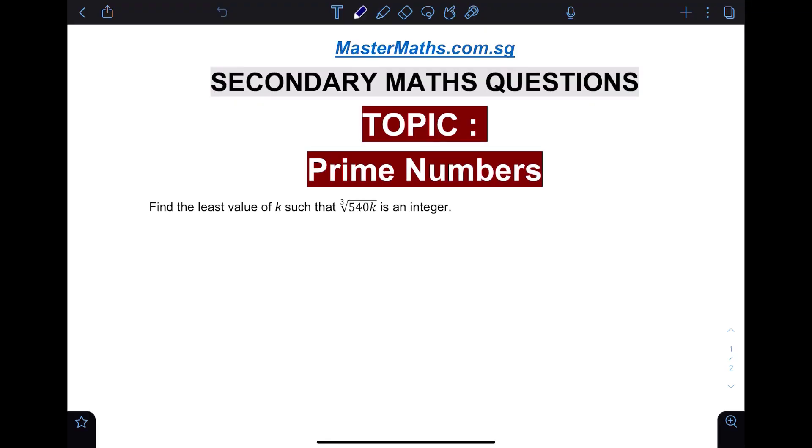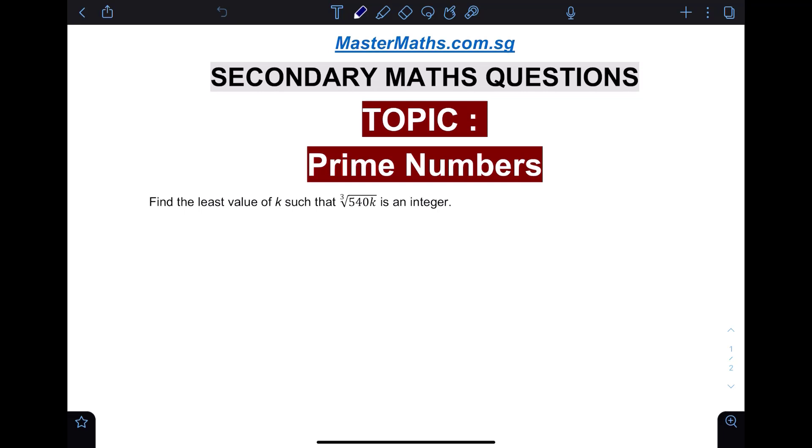This is a question on secondary mathematics involving prime numbers. Find the least value of k such that the cube root of 540 times k is an integer. This means that 540 times k must be a perfect cube. How do I investigate this particular number?